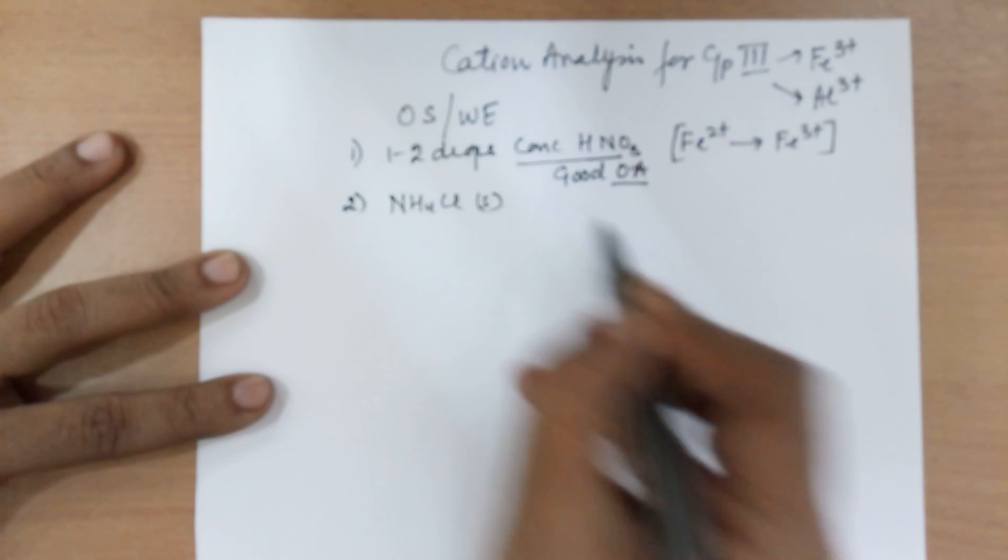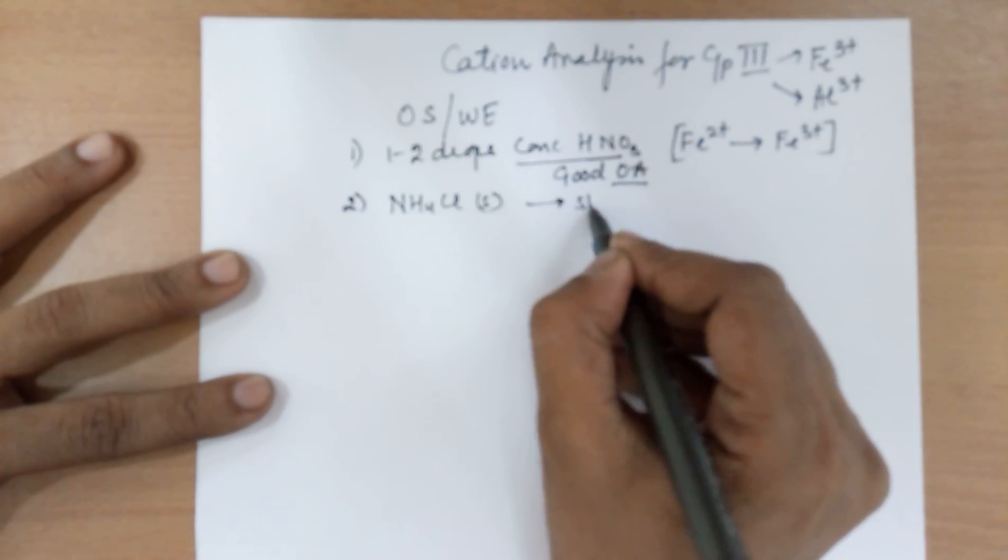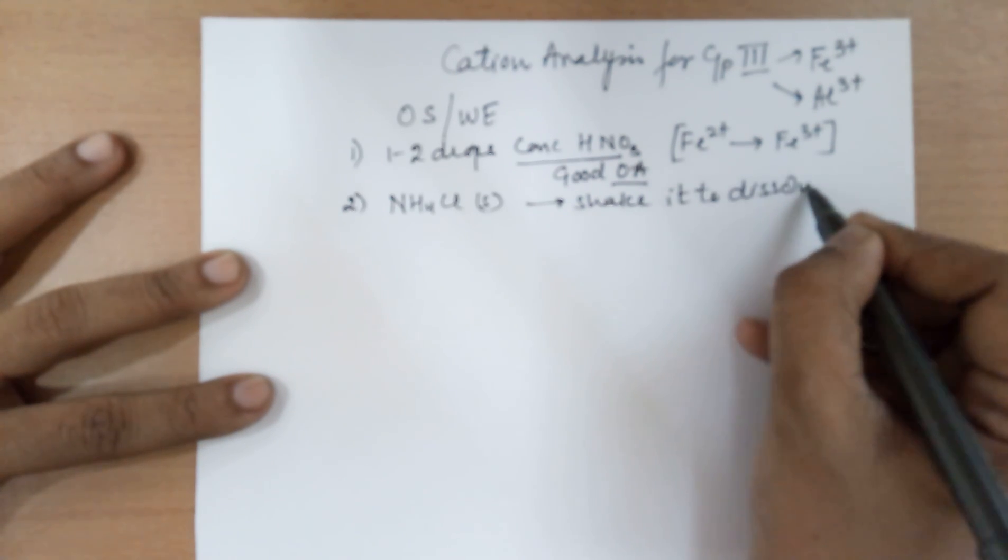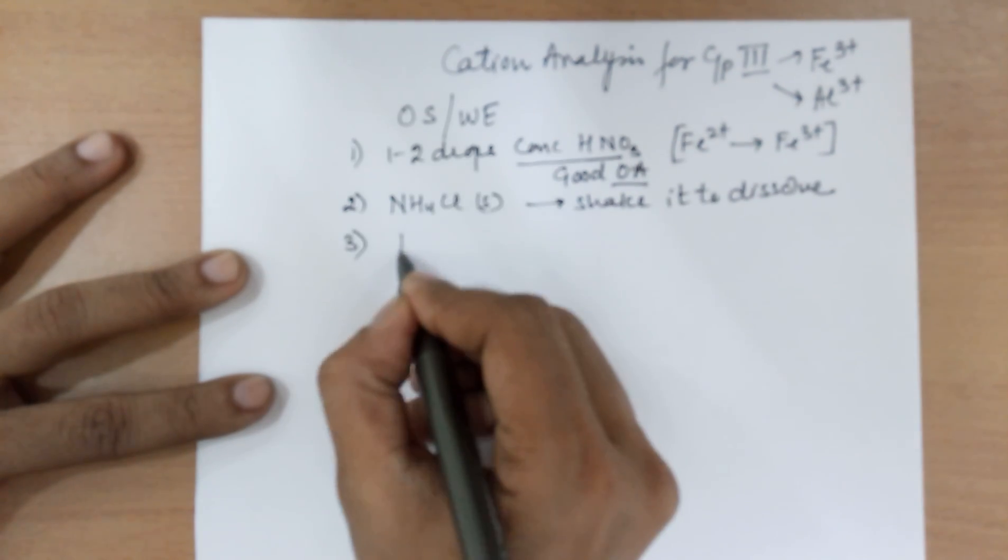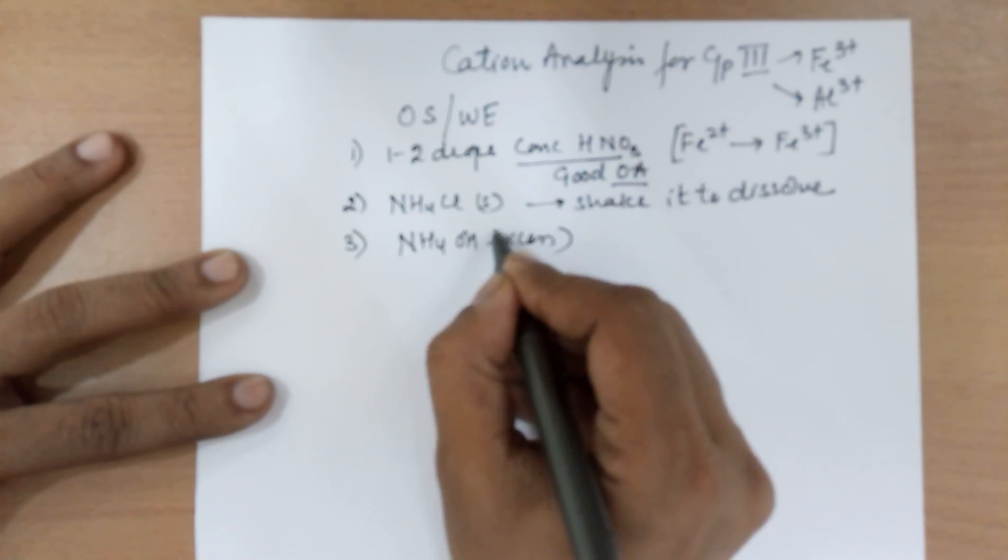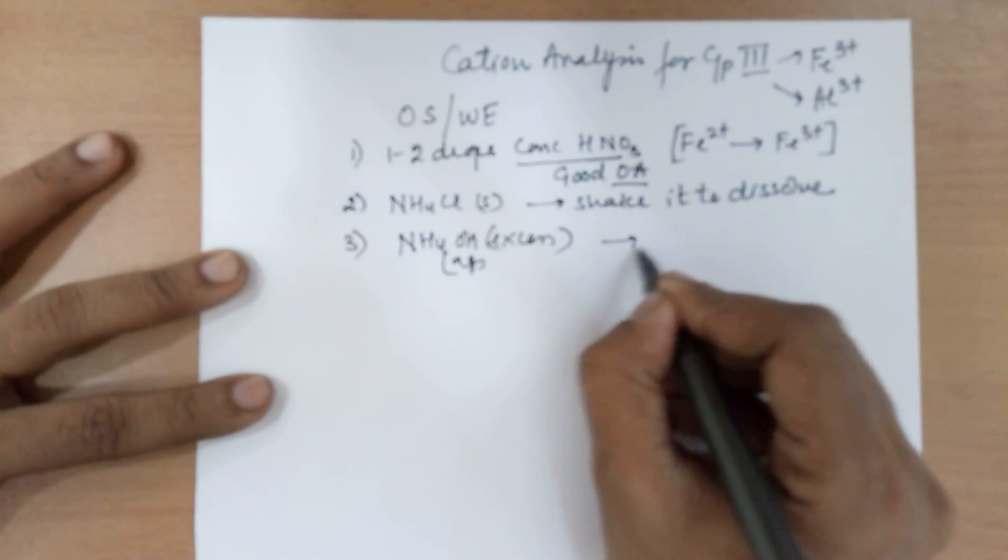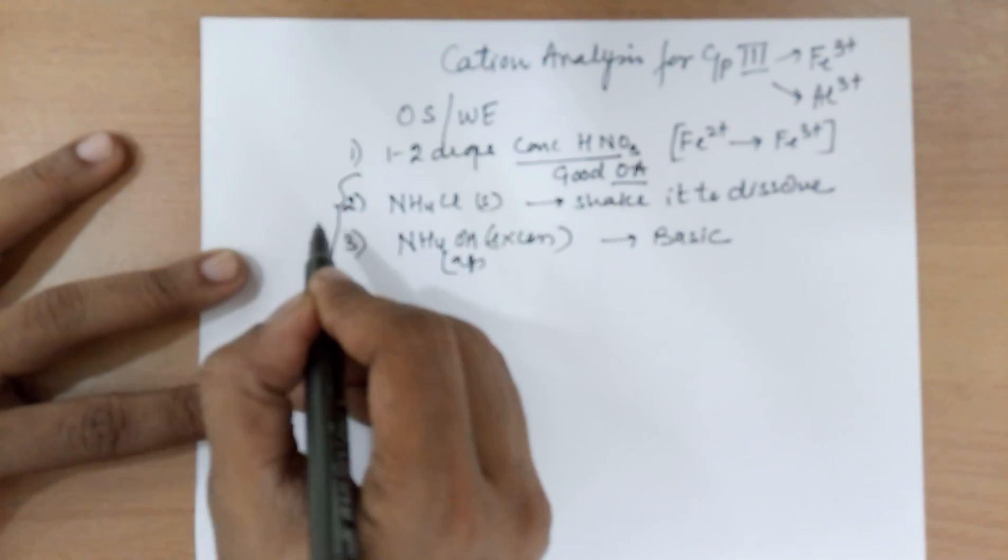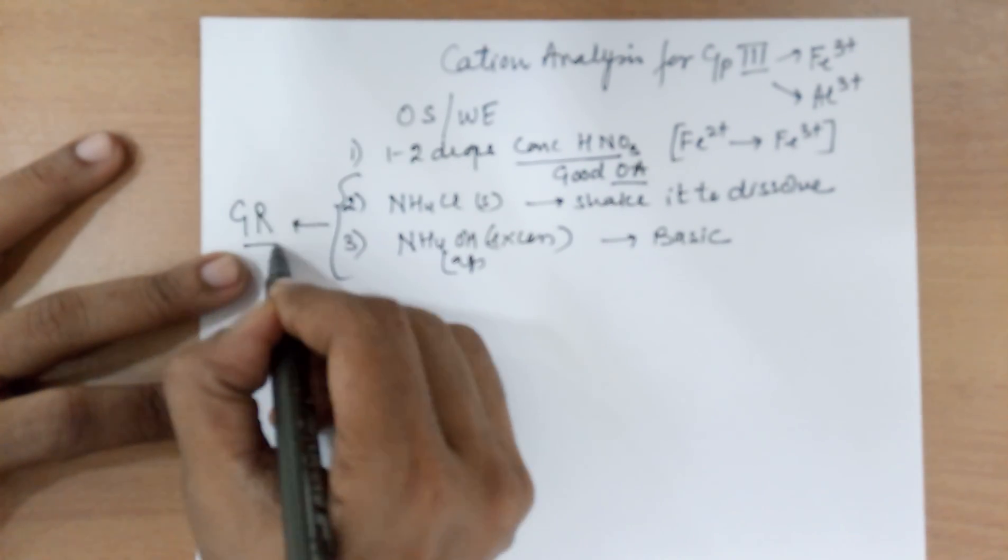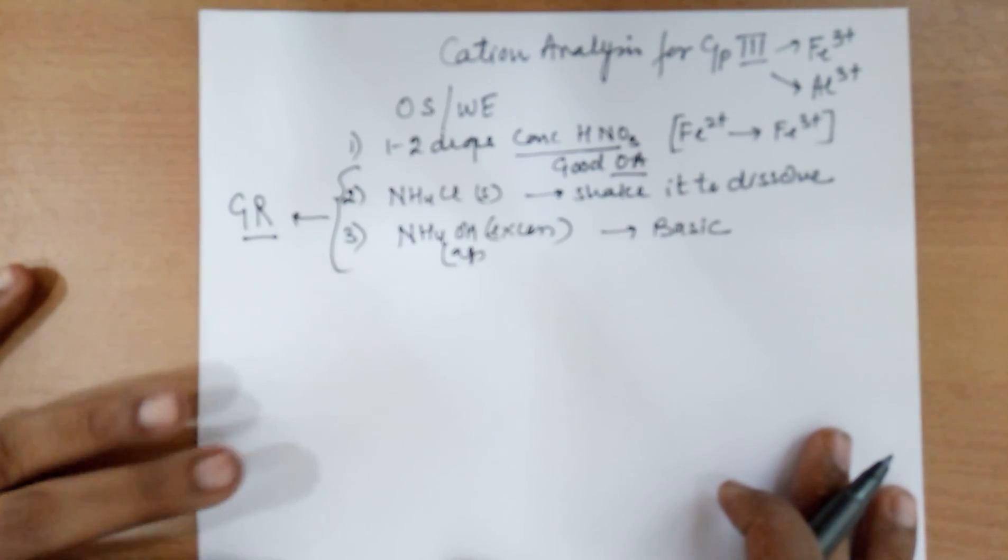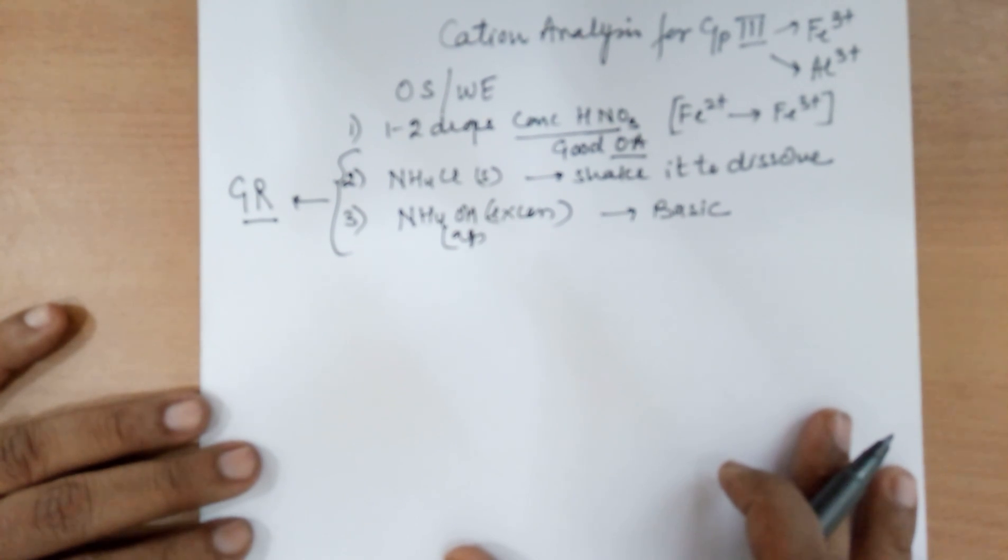The second thing that you need to add is ammonium chloride pinch and you will always shake it to dissolve. Followed by ammonium hydroxide in excess so that the medium becomes basic. So virtually, these are the two things that act as the group reagent for group 3 of cation analysis. You need to add ammonium chloride solid, followed by ammonium hydroxide excess to make it basic.